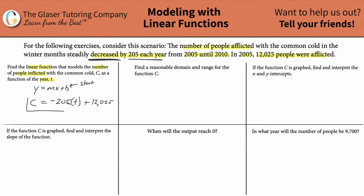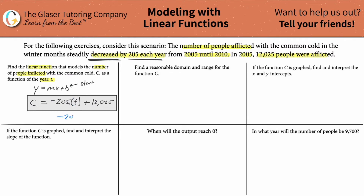So this is now the linear model. You can think about it this way: in 2005, if 12,025 people were afflicted and every single year it decreases by 205, then how many people will be afflicted in the next year — from 2005 to 2006? Well, it's going to be this number minus the 205. That's exactly what this model is telling us to do: plug in the value of one, multiply by negative 205, and add that to 12,025. So hopefully that makes sense.